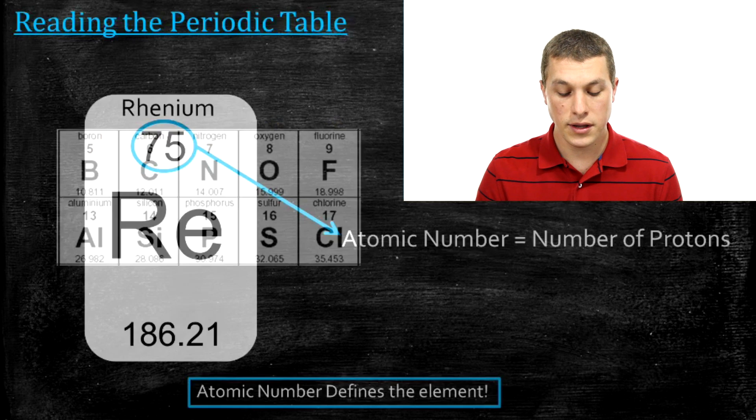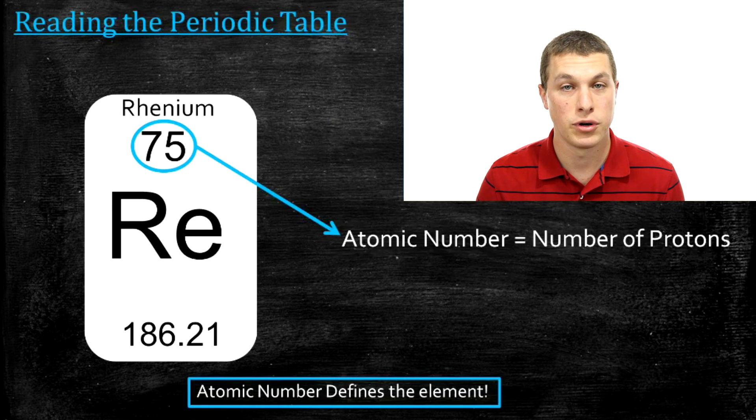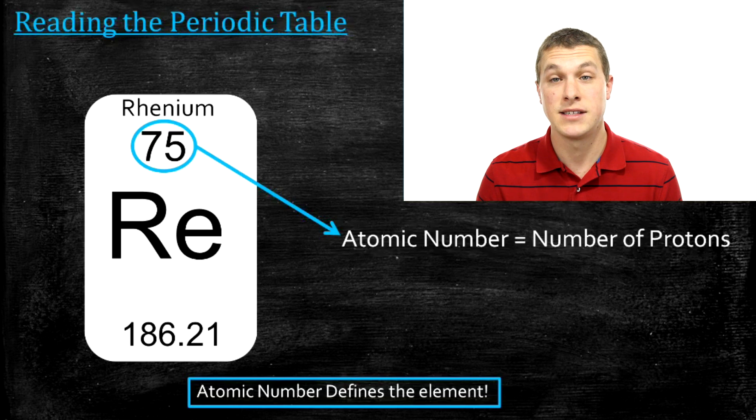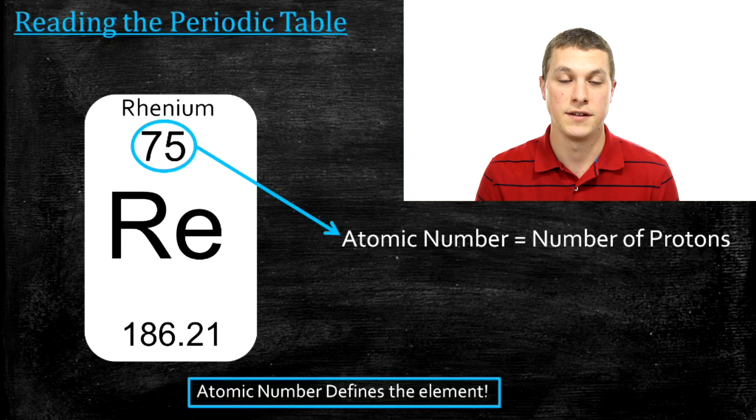And an important thing to note here is that the atomic number, which is the number of protons, actually defines what an element is. What do I mean by that? If you have an element that has 75 protons, it's always rhenium. Always rhenium. So that's what I mean by defines the element.